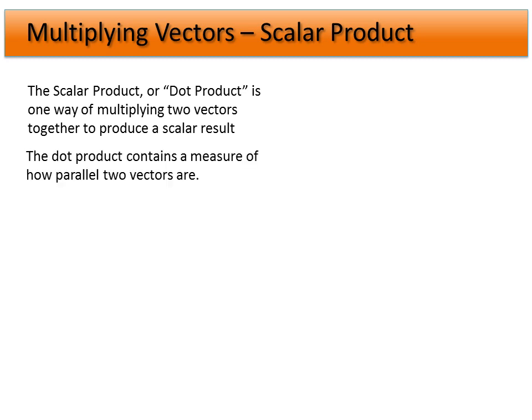You may wonder why we want to do this. Well, there are a couple of examples in physics. The first one you'll probably see is how we use forces and displacement to give us work, which is part of energy. A general way to think of the dot product is that it's really a measure of how parallel two vectors are to each other. The more parallel, the larger the number. The less parallel, or the more perpendicular, the smaller the dot product.